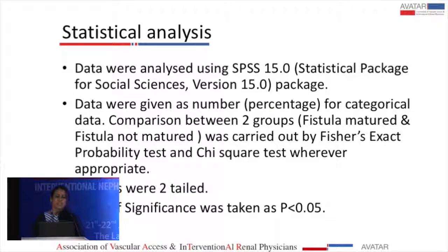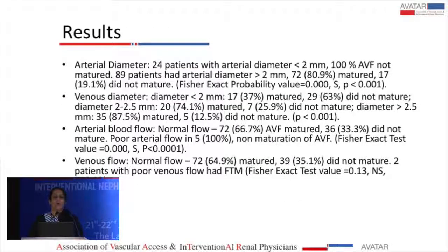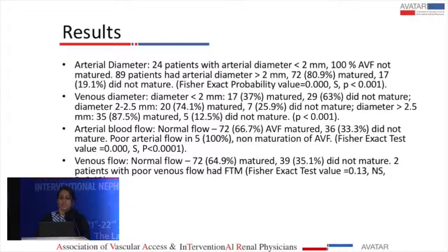Coming to the results — in the arterial sizes, there were 24 fistulas with an arterial diameter of less than 2 mm, and all of them failed to mature, giving 100% non-maturation. Those with a diameter of more than 2 mm had 89 fistulas constructed; 72 matured and 17 did not, giving only 19% non-maturation. In the venous sizes, those with less than 2 mm venous diameter had 63% non-maturation.